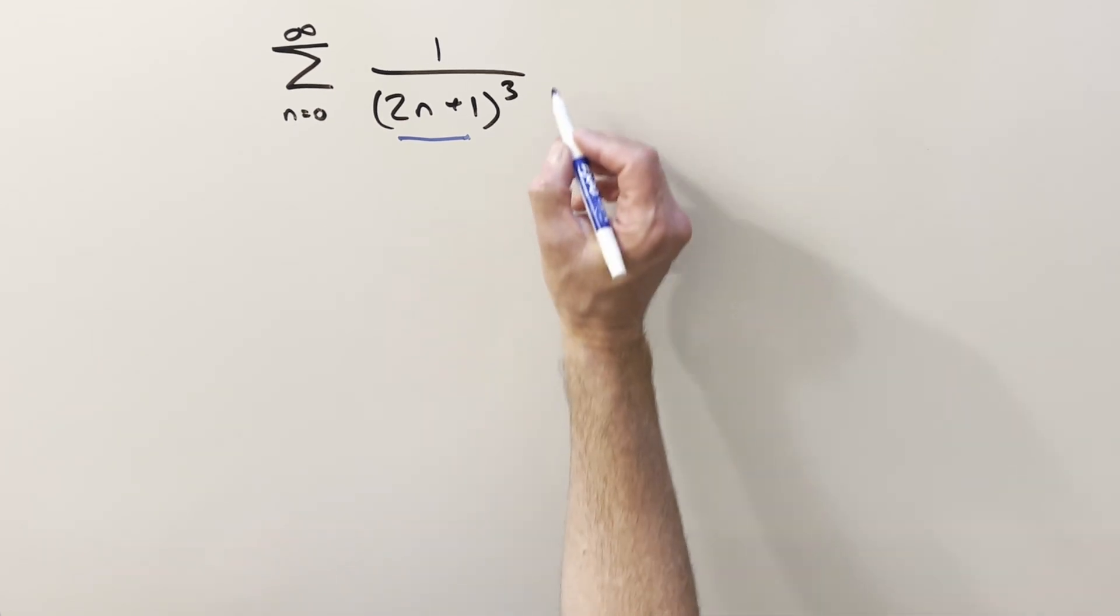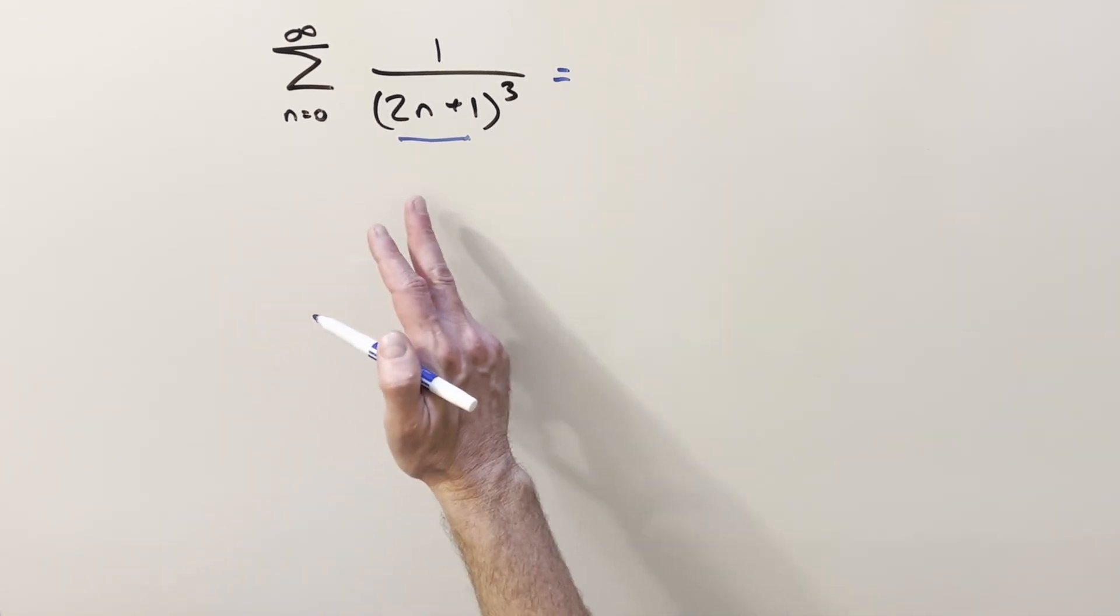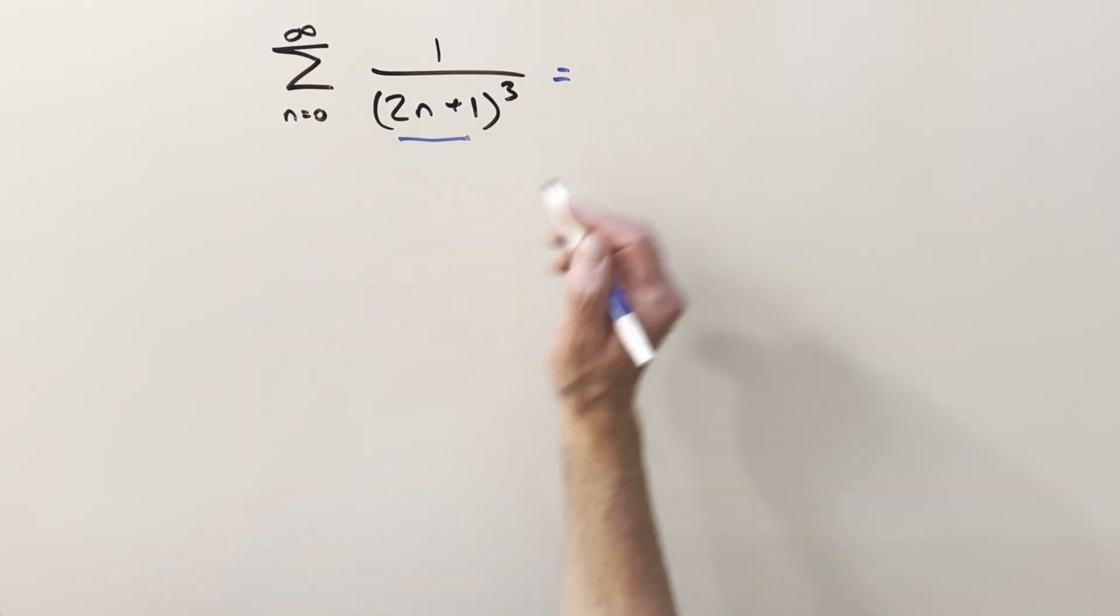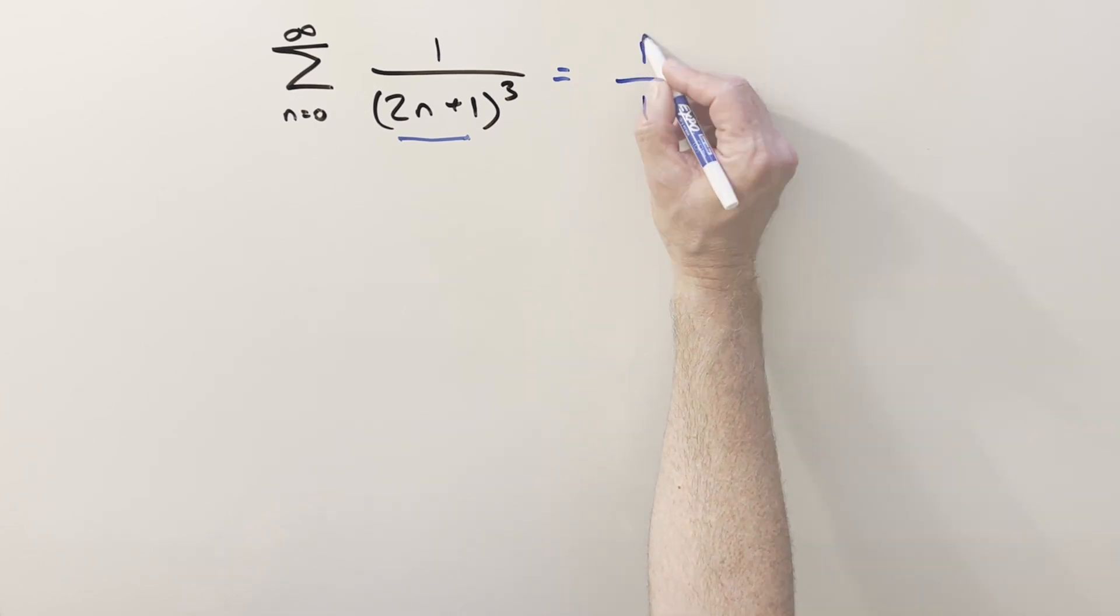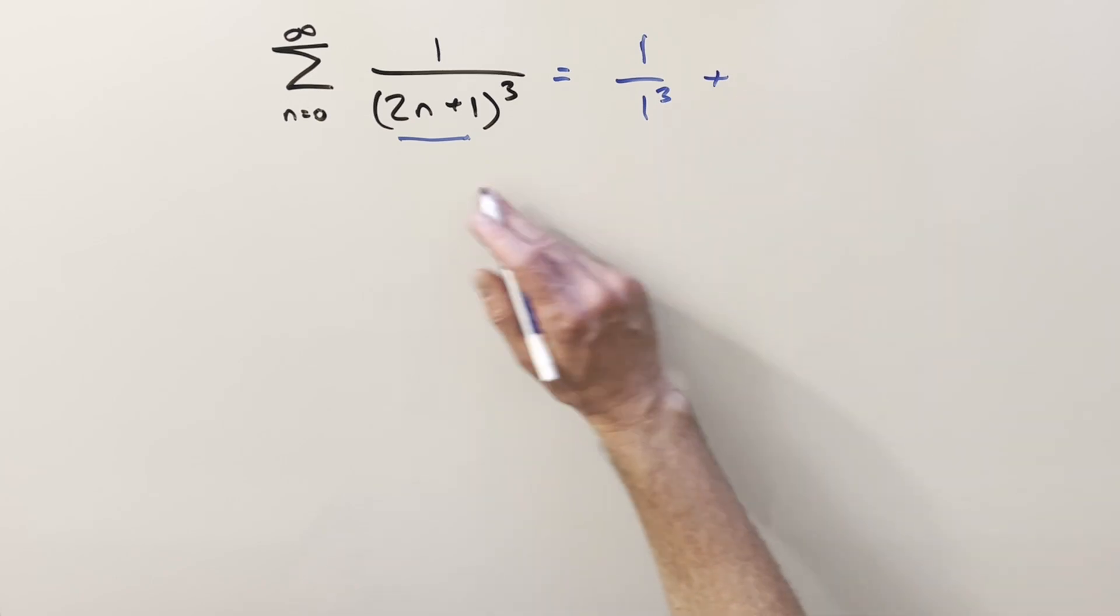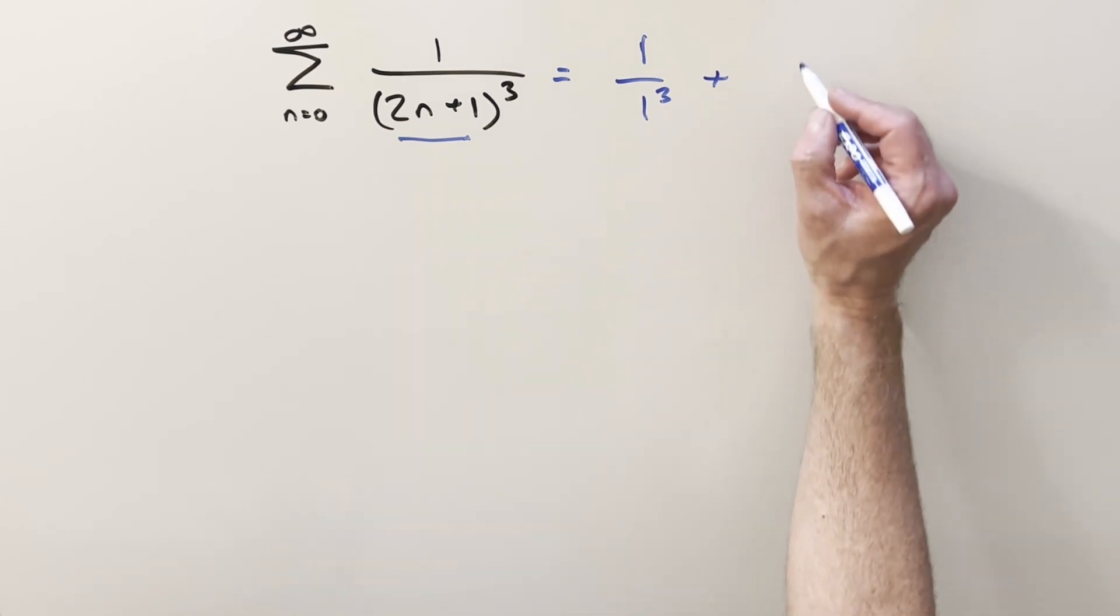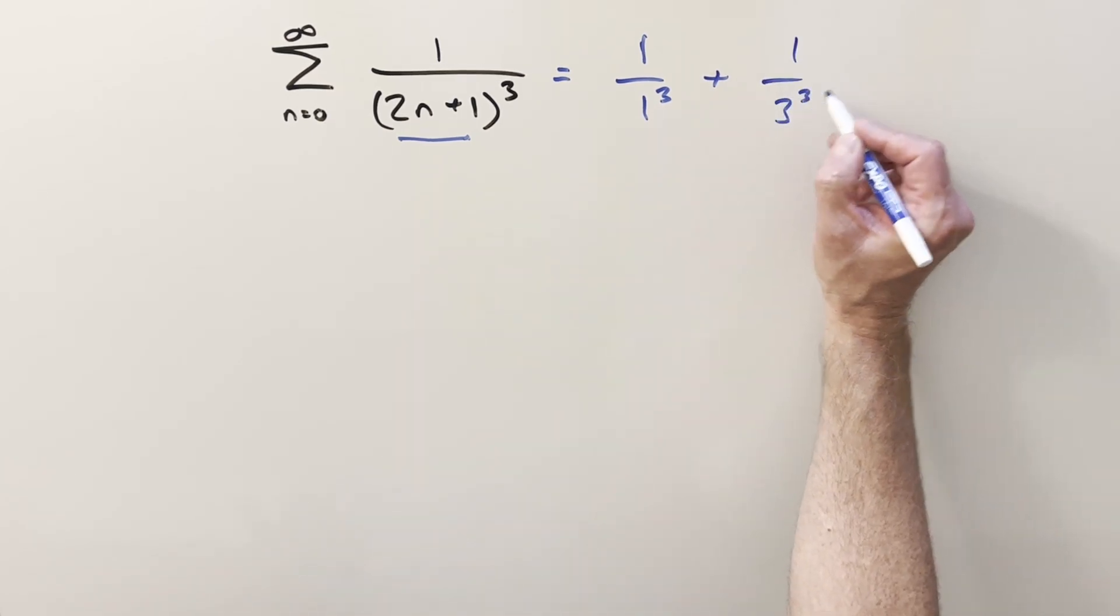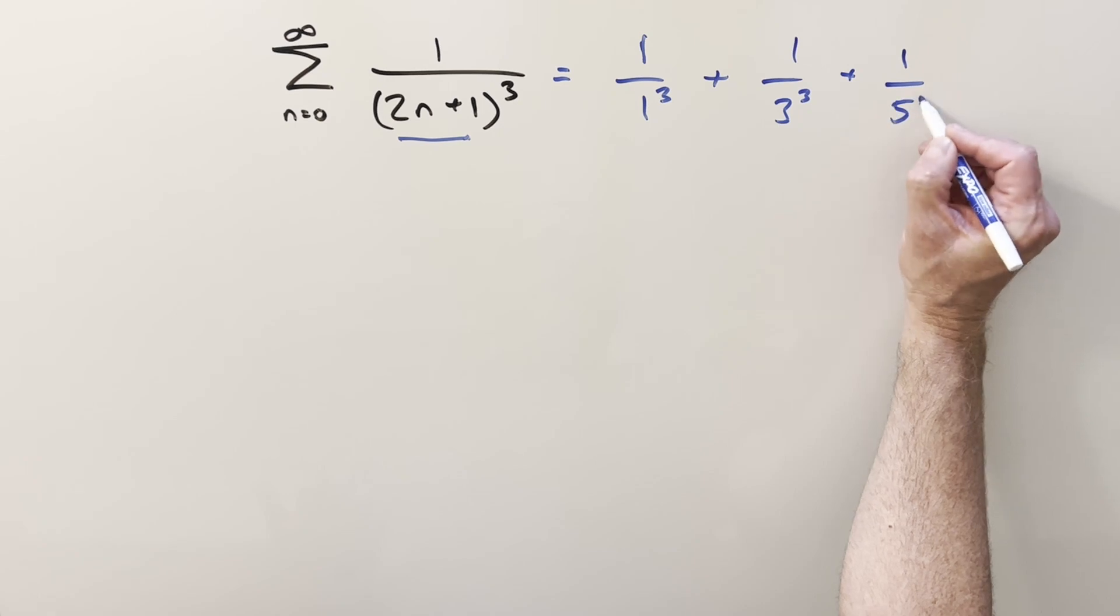Let's write out some terms to see what's happening. If we plug in n=0, the first one is 1/1³. Then for n=1, we have 1/3³, then 1/5³, etc.